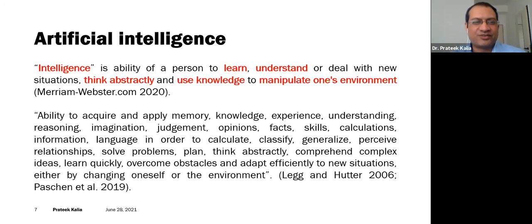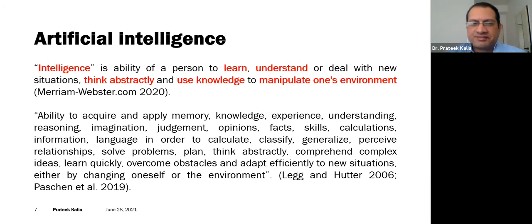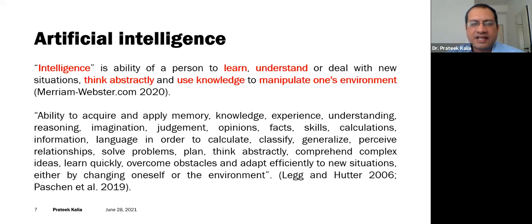Now I will specifically talk about artificial intelligence. Before I do, we should understand what intelligence means in terms of human intelligence. It is the ability of a person to learn, understand, and deal with new situations, think abstractly, and use knowledge to manipulate one's environment. A more elaborate definition involves the ability to acquire and apply memory, knowledge, experience, and understanding.